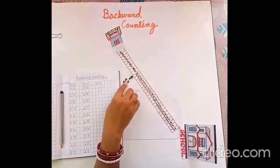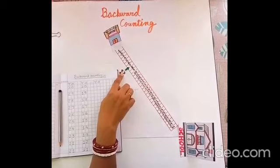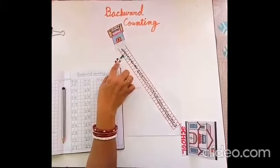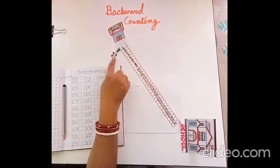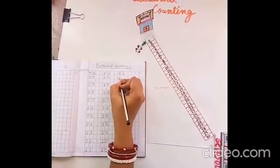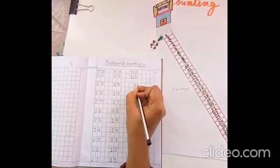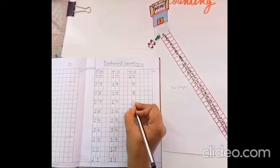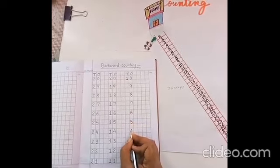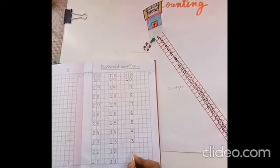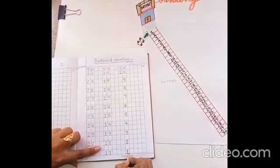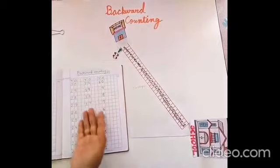Step number 10, step number 9, 8, 7, 6, 5, 4, 3, 2, and 1. Yes! You have reached your home. Let's write. 10, 9, 8, 7, 6, 5, 4, 3, 2, and 1. And by this we have learned writing backward counting.